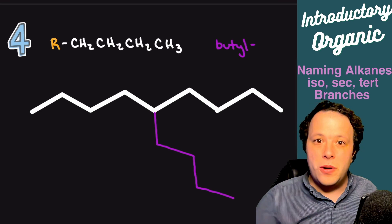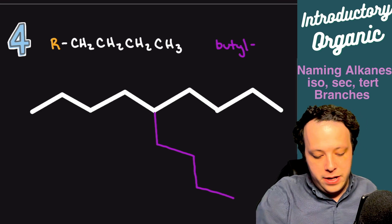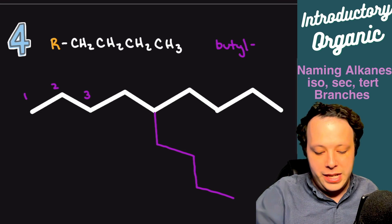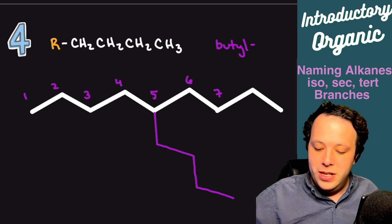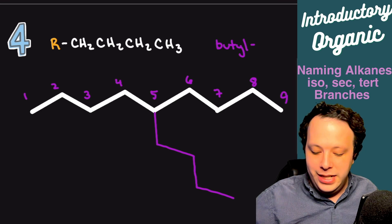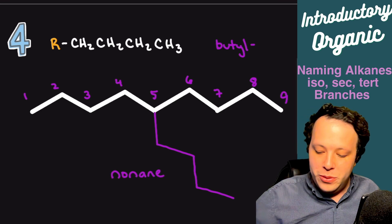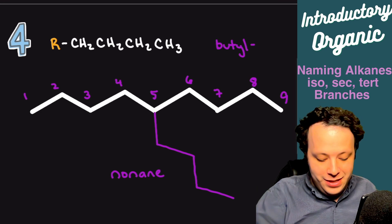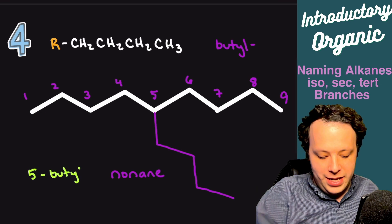I'm going to put it right here in the middle to go through naming this structure. Butyl is four carbons long. This is also a nonane. We have one, two, three, four, five, six, seven, eight, nine, and our butyl is at number five. So we would say five-butyl nonane for the name.